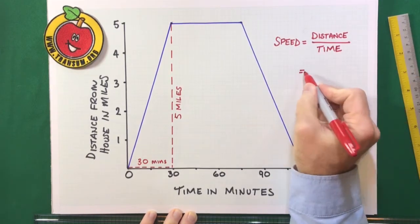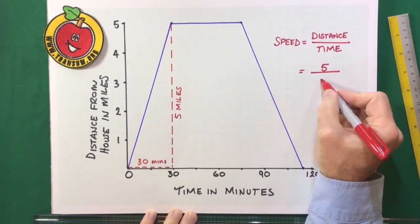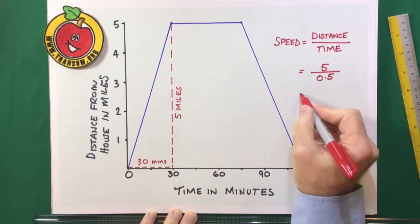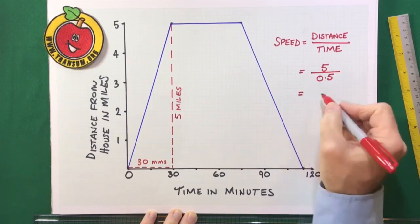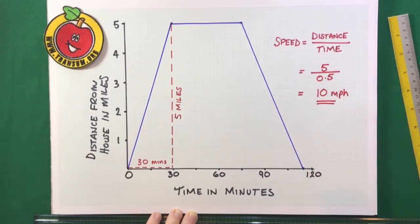So, to calculate the speed, we do distance over time or rise over run. It's the same calculation. And that will give us the five over... Well, 30 minutes is half of an hour. And I want to work in hours, really, to get a speed in miles per hour. So, five divided by 0.5 is 10 miles an hour. That's the speed.